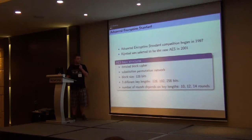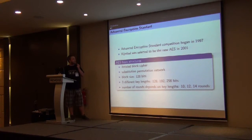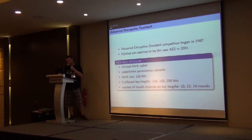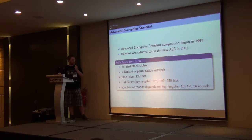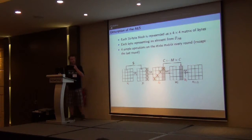The competition to select the AES began in 1997, and the cipher designed by Rijndael was standardized four years later. It's an iterative block cipher based on the substitution-permutation network, standardized with a block size of 128 bits and three different key sizes. The number of rounds depends on the key size. Each 16-byte block is represented as a 4-by-4 matrix of bytes, where each byte is seen as an element of the finite field F256.